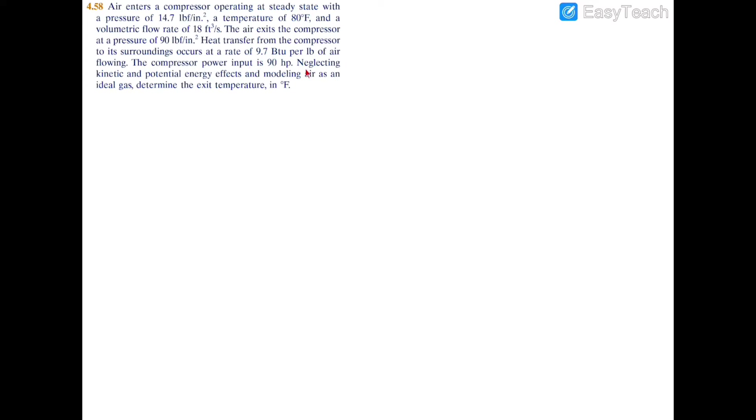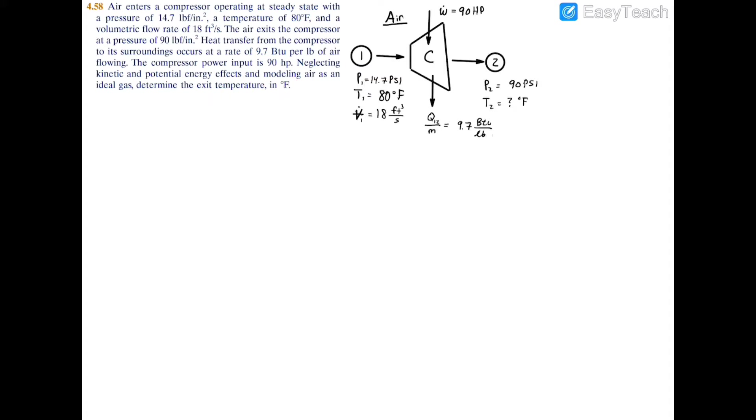In this problem we have air entering into a compressor. We have the pressure, temperature, and volumetric flow rate at the inlet, and at the exit we have just the pressure. We also have the heat transfer and the power going into or out of the compressor. We're told to neglect kinetic and potential energy, and we can model this as the ideal gas model. We have to determine the final temperature in degrees Fahrenheit. Here we have our schematic with the inlet and the exit, one on either side.